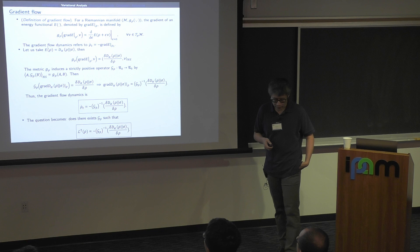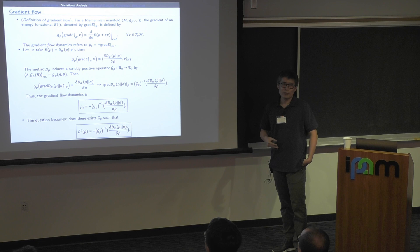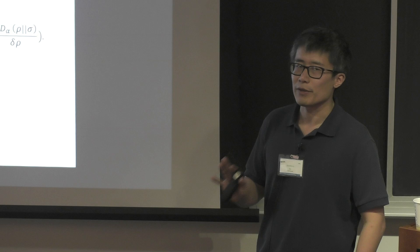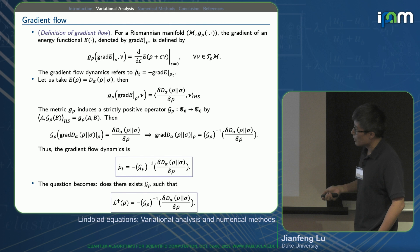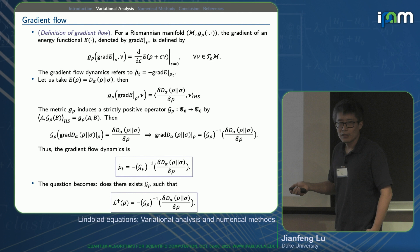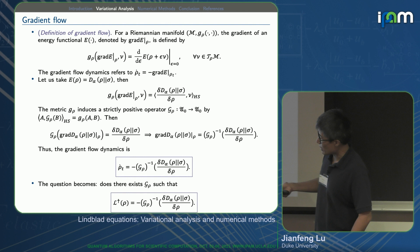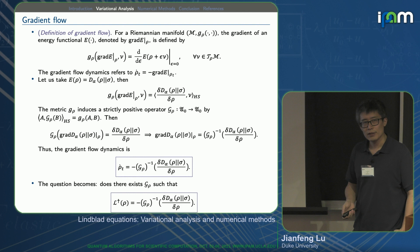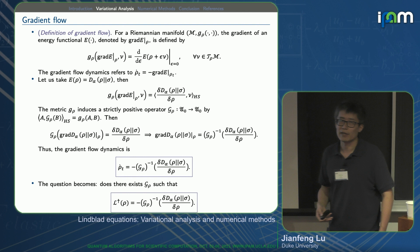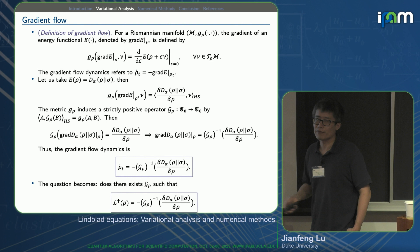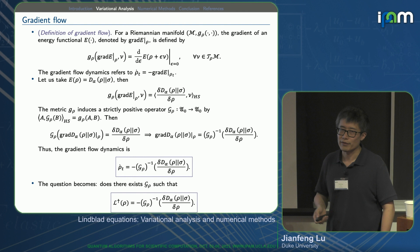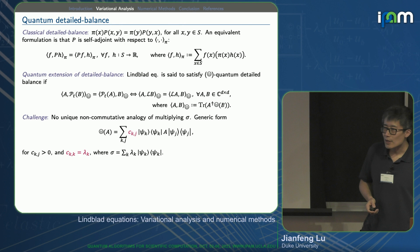The question is: in what sense is the Lindblad equation a gradient flow? Because we know it's a CPTP map and it dissipates things. So we expect that if there is no Hamiltonian term, no driving of the system, then it is a gradient flow — it dissipates something. We want to find a metric — equivalently, find this operator — so that L-dagger can be written in that gradient flow form. This is also how JKO classically discovered that the Wasserstein metric is the natural metric: they do the same calculation, realize the Fisher information, invert it, and it becomes the Wasserstein metric.